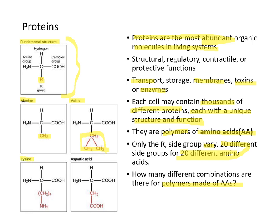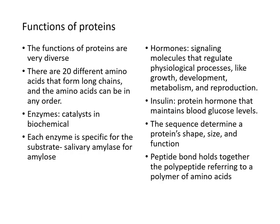Lysine is a slightly basic amino acid because of the amine group attached to it. Aspartic acid is slightly acidic due to a carboxylic acid attached as a side chain. There are 20 different amino acids that form long chains in any order. Enzymes are made up of proteins and function as catalysts in biochemical reactions, and each enzyme is specific for its substrate — for instance, salivary amylase acts on amylose.